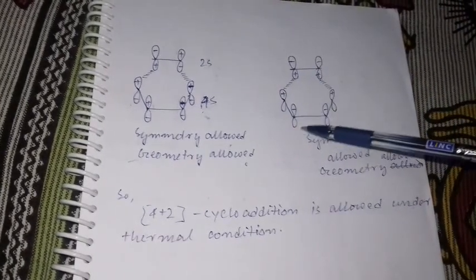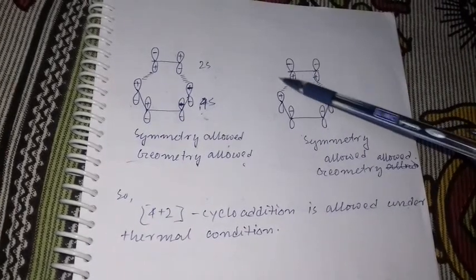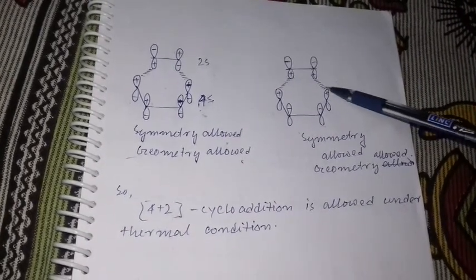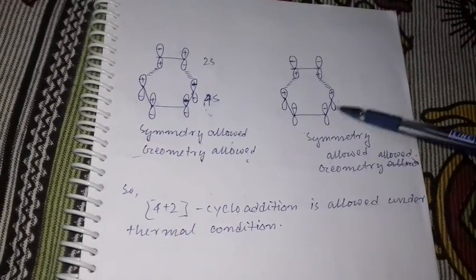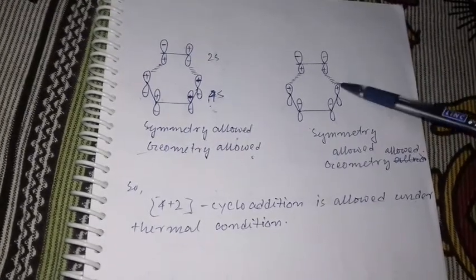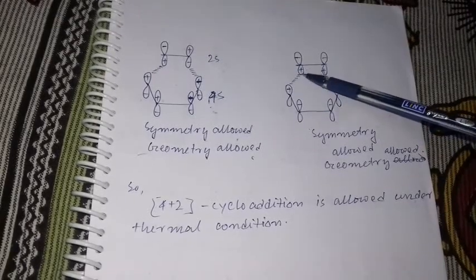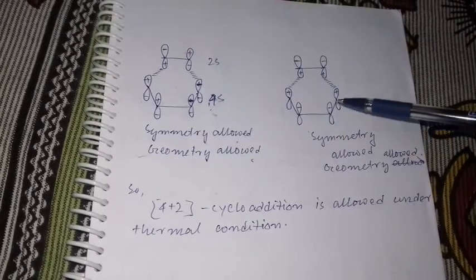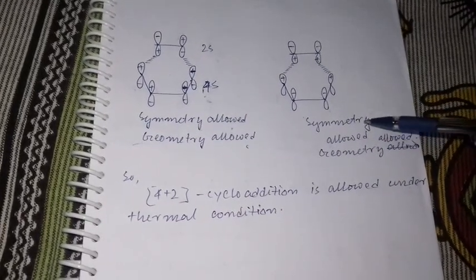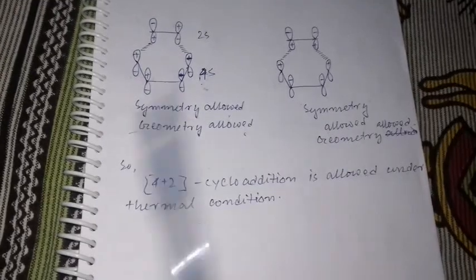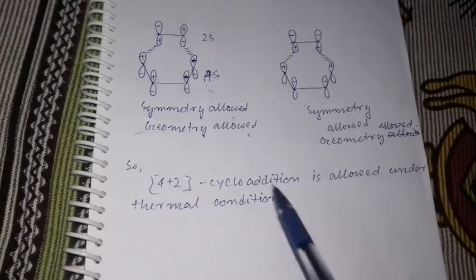Considering the reverse interaction — the HOMO of the alkene system reacting with the LUMO (psi 3) of the butadiene system — positive lobes interact with positive lobes on both ends. This is also a supra-supra addition and is both symmetrically and geometrically allowed. Therefore, 4+2 cycloaddition reactions are allowed under thermal conditions.